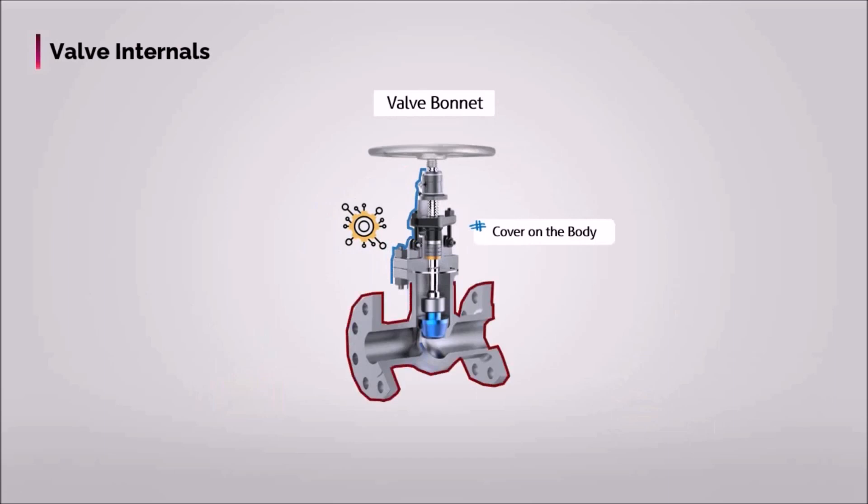Customarily, it's linked to the body by welded, threaded or bolted joint. The inner constituents of valves such as discs, stem and etc. are put into the valve body and then the bonnet is attached to hold all parts together inside.